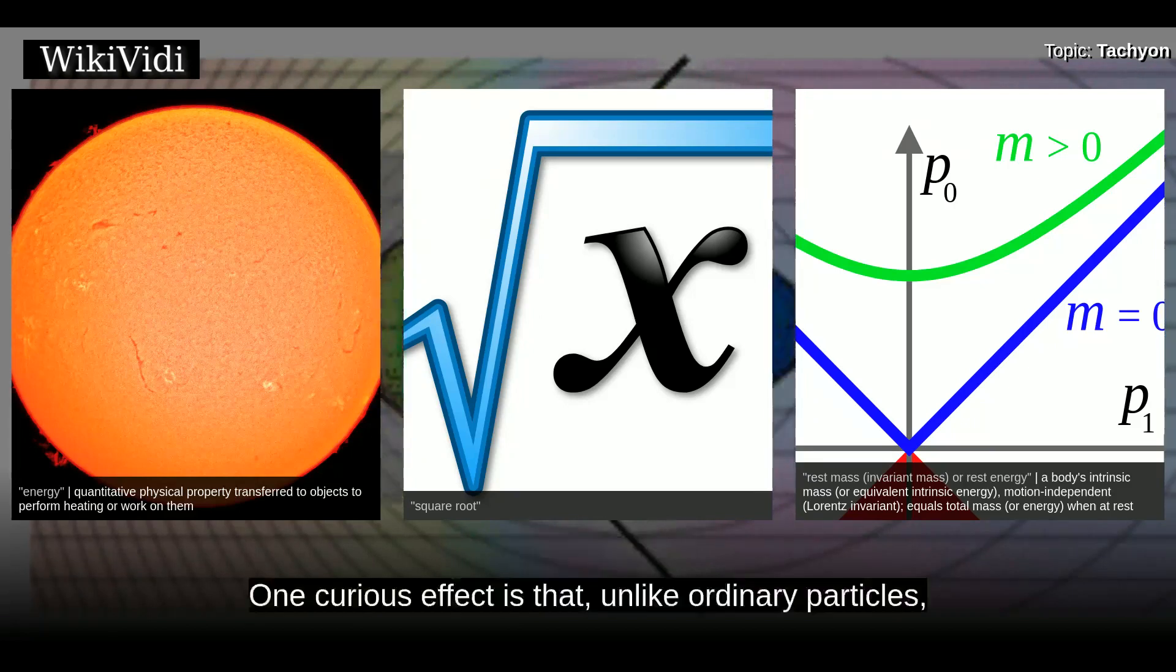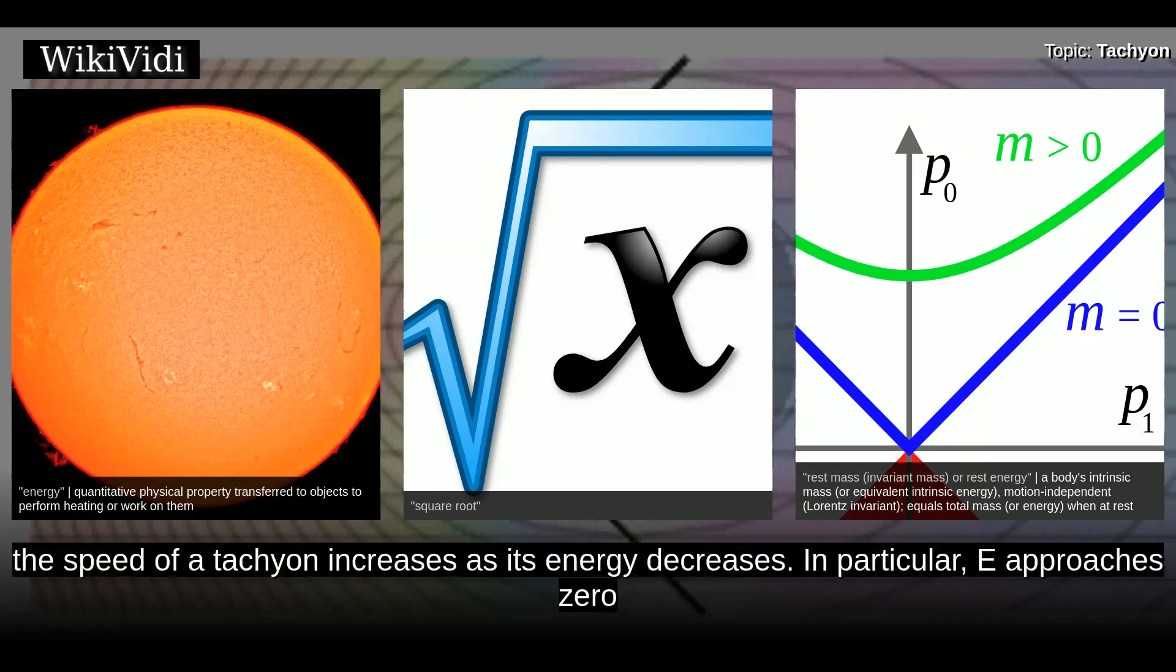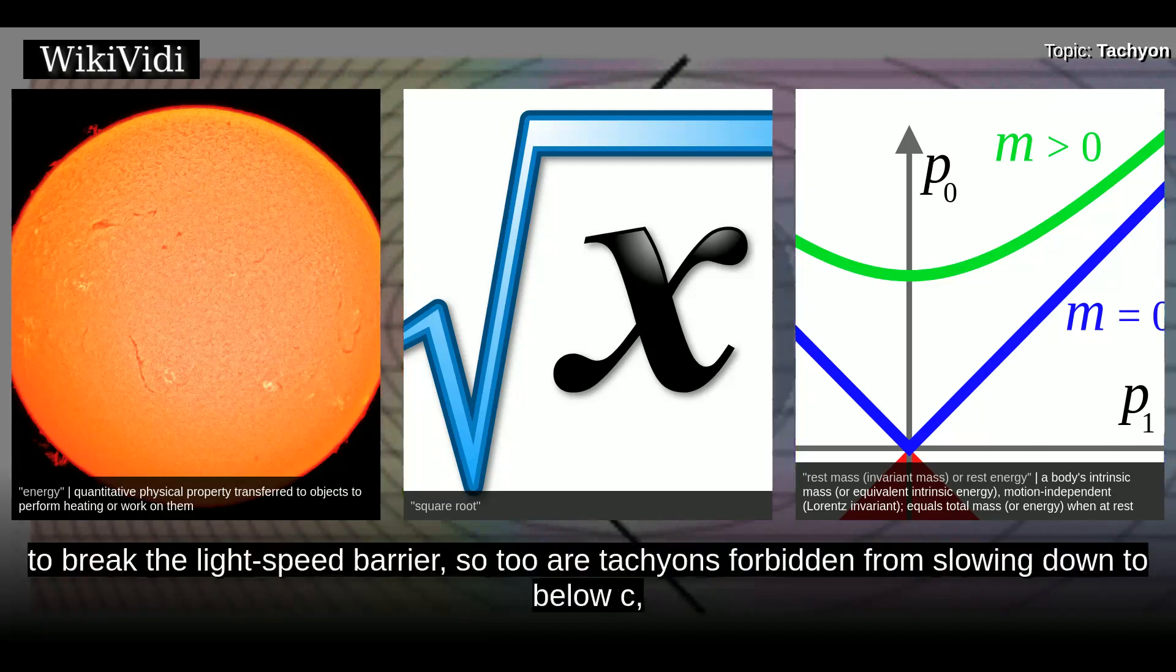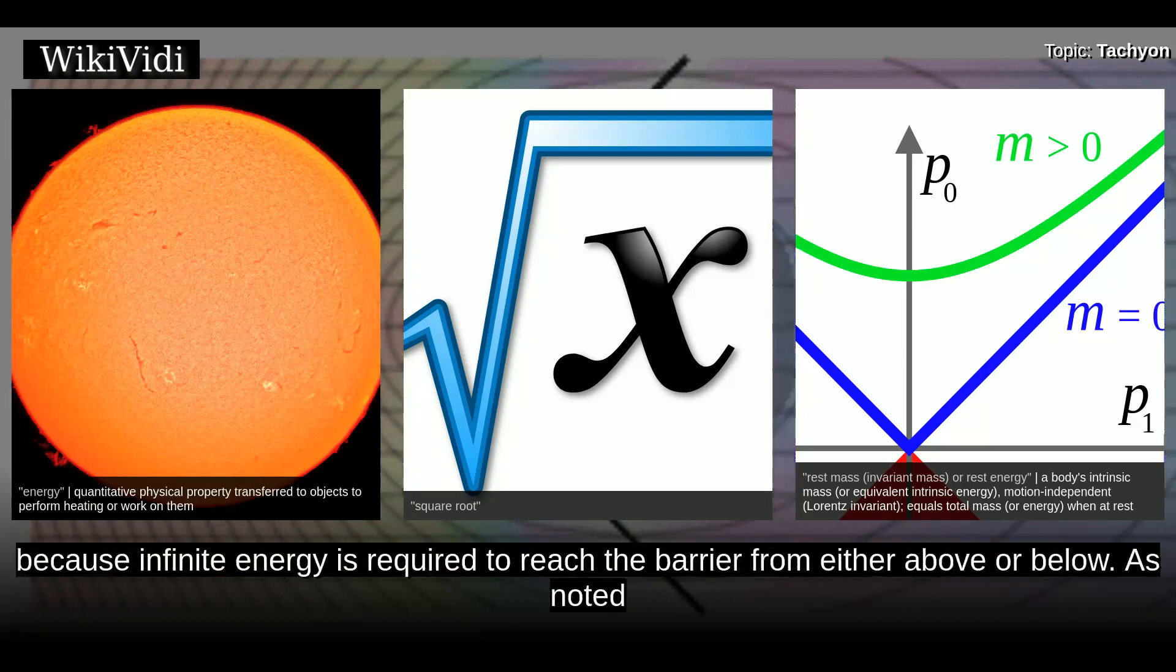Speed. One curious effect is that, unlike ordinary particles, the speed of a tachyon increases as its energy decreases. In particular, E approaches zero when v approaches infinity. Therefore, just as bradyons are forbidden to break the light-speed barrier, so too are tachyons forbidden from slowing down to below c, because infinite energy is required to reach the barrier from either above or below.